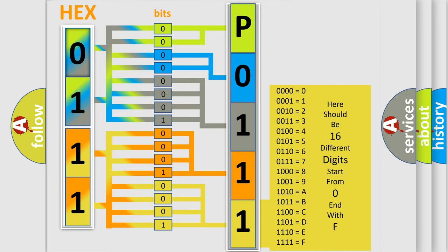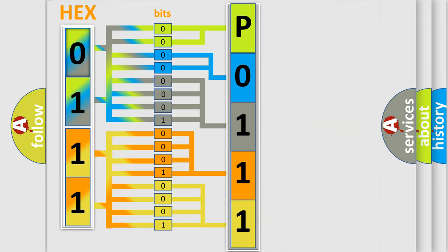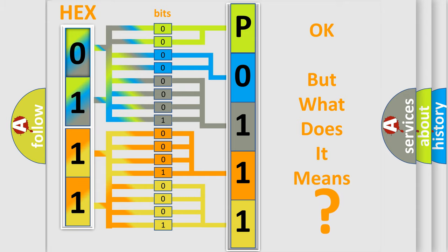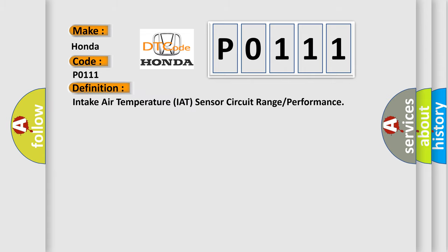We now know in what way the diagnostic tool translates the received information into a more comprehensible format. The number itself does not make sense to us if we cannot assign information about what it actually expresses. So, what does the diagnostic trouble code P0111 interpret specifically? Honda car manufacturers — the basic definition is: Intake Air Temperature (IAT) sensor circuit range or performance.